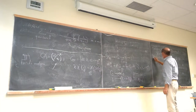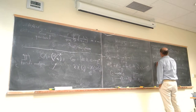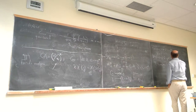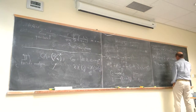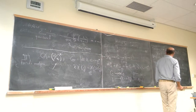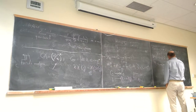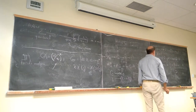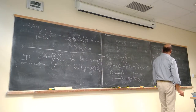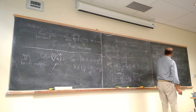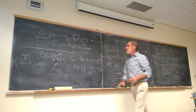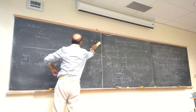An obvious basis for V is given by the characteristic functions: for each element g in the group, define f_g(h) = 1 if h = g, and 0 if h ≠ g. Any function can be written in terms of these functions. So if I can write these characteristic functions in terms of characters, then I can write any function in terms of characters, which proves they span.